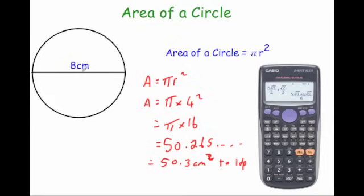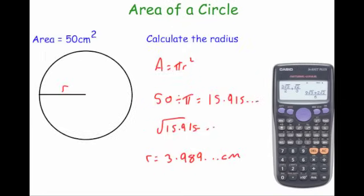If you're given the diameter, you need to half it first to get the radius, then square it times by pi. And if you needed to work backwards and find the radius, instead of squaring it and times by pi, you divide by pi and then square root it. And then you'd work out your answer.